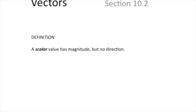The other thing in there is the word scalar. A scalar value has magnitude but no direction — it's just a number. Seven is bigger than five; it doesn't matter what direction you're going.